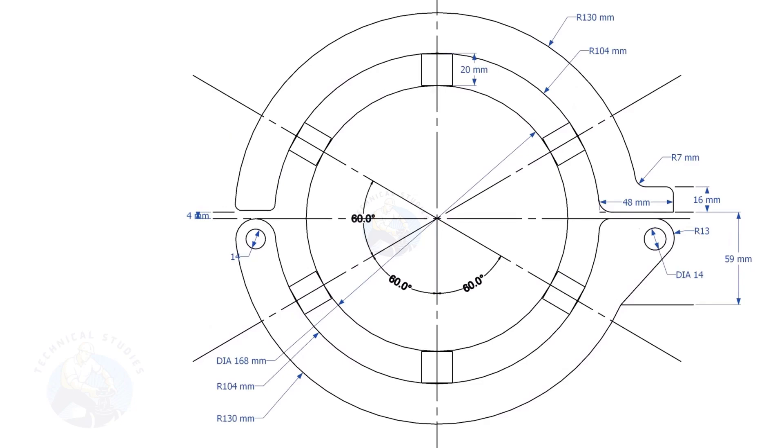This layout is for a 6-inch diameter pipe clamp. Draw the center lines and draw a circle of diameter 168 millimeters, that is the OD of the 6-inch pipe.